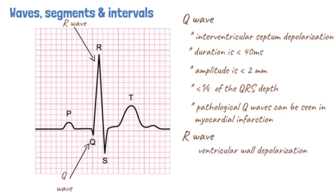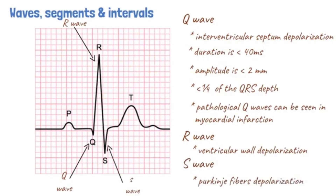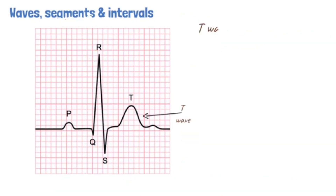A negative deflection after the R wave is called an S wave. This wave represents the depolarization of the Purkinje fibers. The positive deflection seen on the ECG tracing following the QRS complex is called a T wave. T waves represent ventricular repolarization.